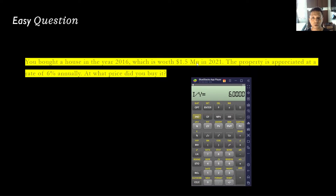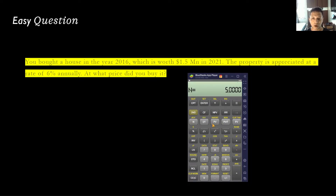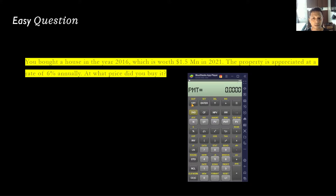Between 2016 and 2021 there are five years, so press 5 and then N, which represents the number of years of compounding. We're finding the price paid in 2016 — the present value or initial investment. For PMT (recurring payments), we have none, so press 0 and then PMT. Now press CPT (compute) and then PV. The answer is 1.120 million dollars.